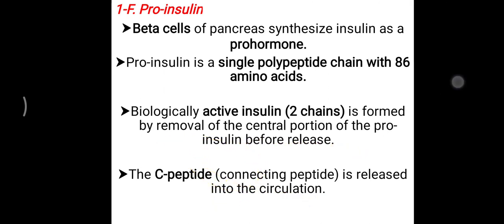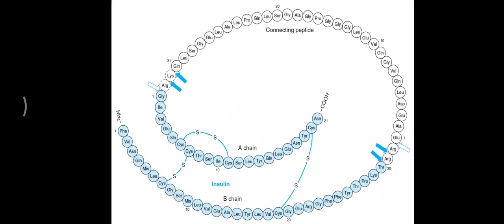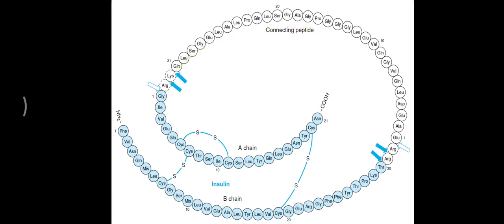As shown in the picture, the A chain (glycine chain) and B chain (phenylalanine chain) are connected, and the connecting C-peptide is separated when pro-insulin is converted to insulin. Sometimes, instead of measuring insulin in the blood, this C-peptide is measured — it gives the significance of insulin secretion from the pancreas.